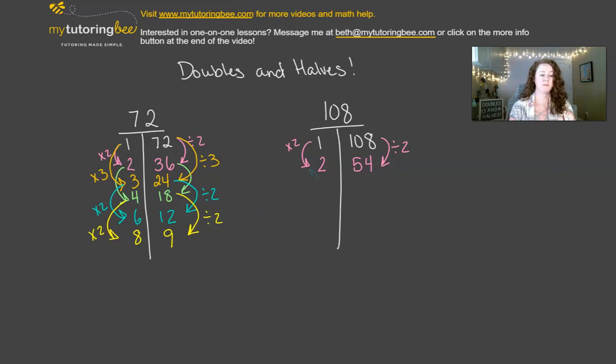Then we can do that same thing again. We can double 2. Then we can take half of 54, which is 27.